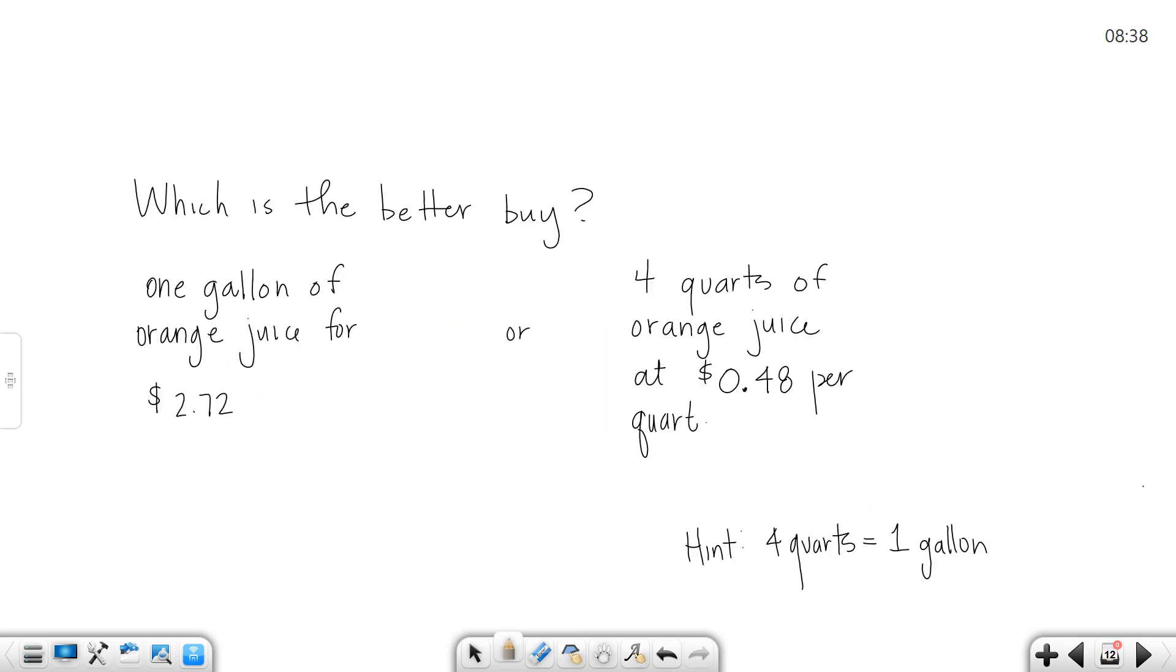Alright, which is the better buy? You have 1 gallon of orange juice for $2.72, but you have 4 quarts of orange juice for $0.48 per quart. We need to see how much 1 gallon costs in both scenarios. This is 1 gallon over here, I don't have to do any work. But remember, 4 quarts is a gallon. So if I take 0.48 per quart and I multiply it by 4, because that's the number of quarts in the gallon, 16 plus 3 would be 19. Remember I moved it 2 places. If I bought them separately in quart form, I would pay $1.92 for the orange juice as opposed to $2.72. So this is the better buy.